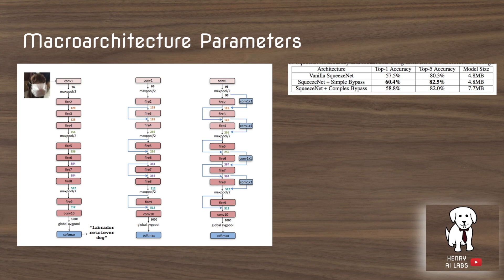They also explore macro architecture parameters including ResNet-style skip connections. A simple bypass is used when feature maps match in spatial resolution. A 1x1 convolution is used to add skip connections when the feature map dimensions don't match, since you can't directly concatenate tensors of different dimensionality.